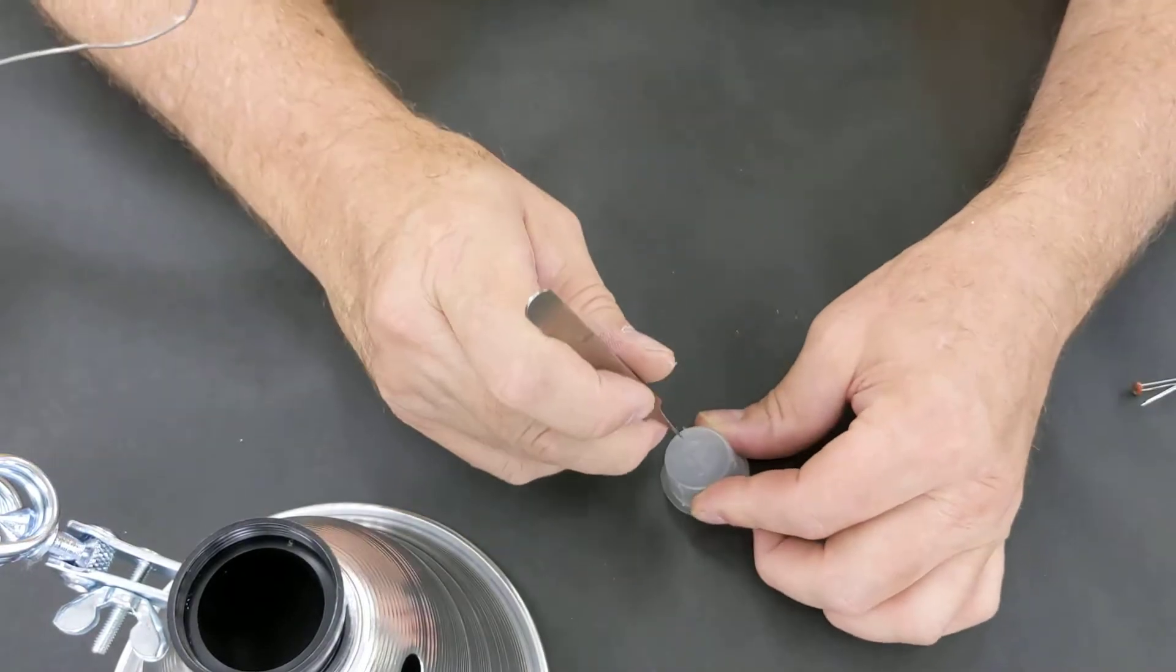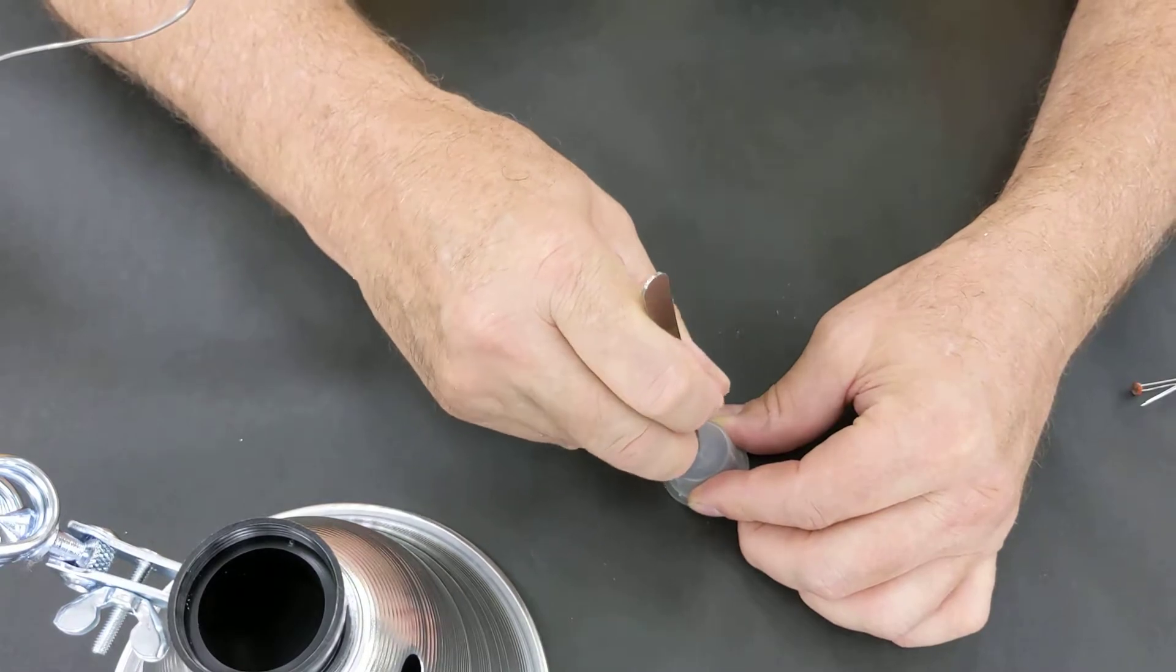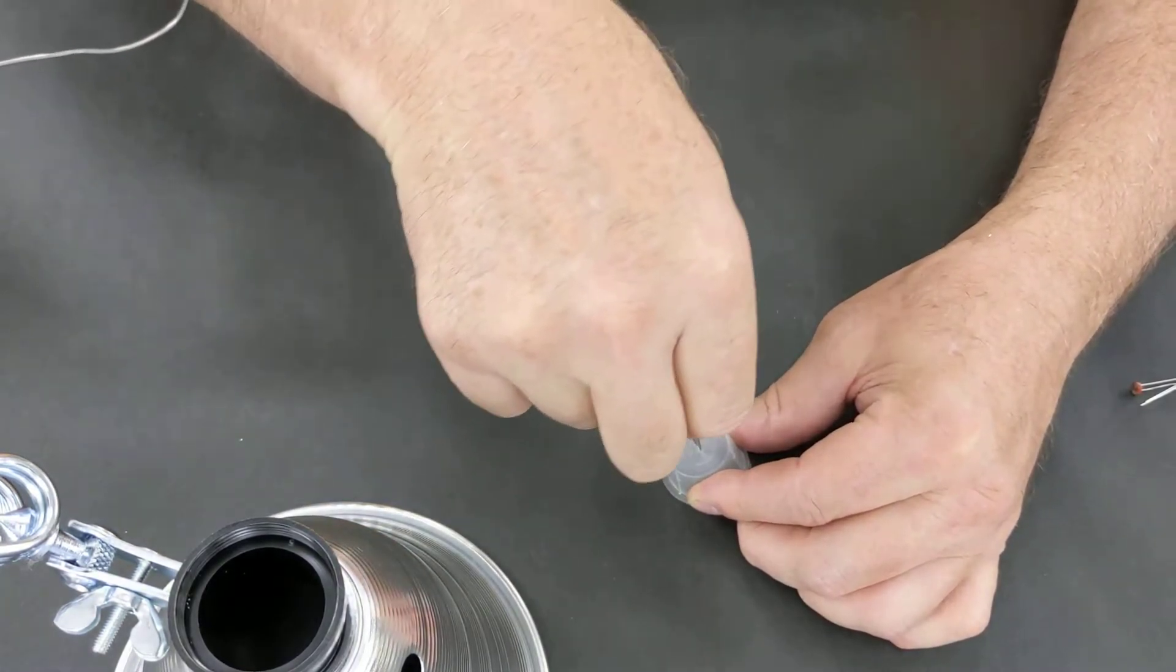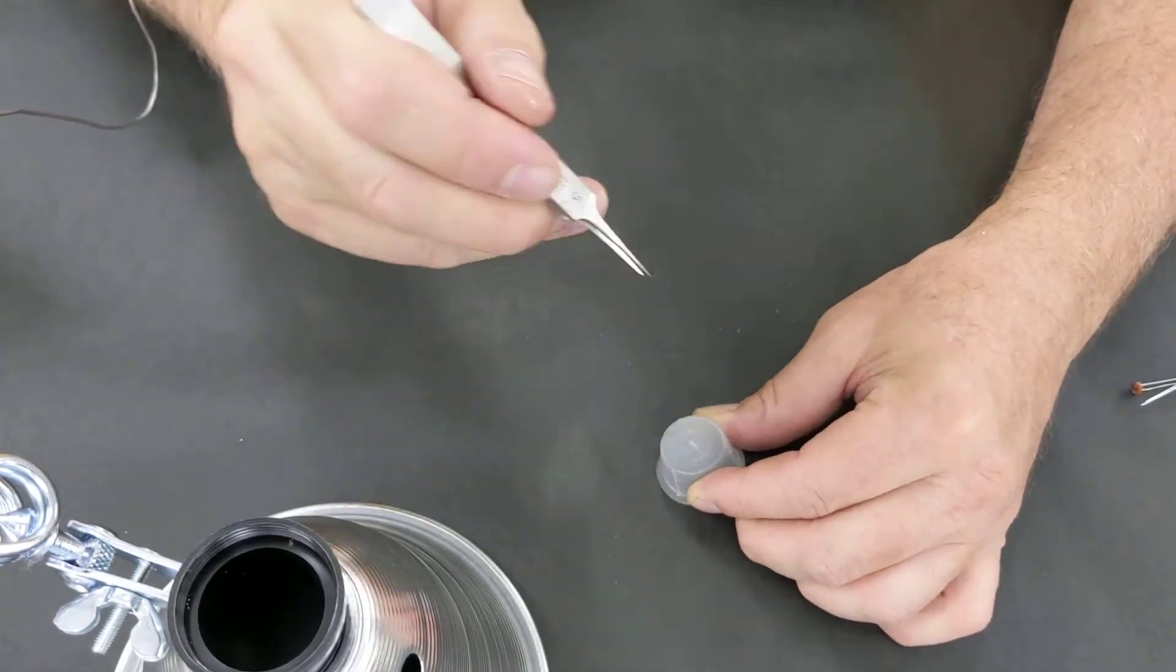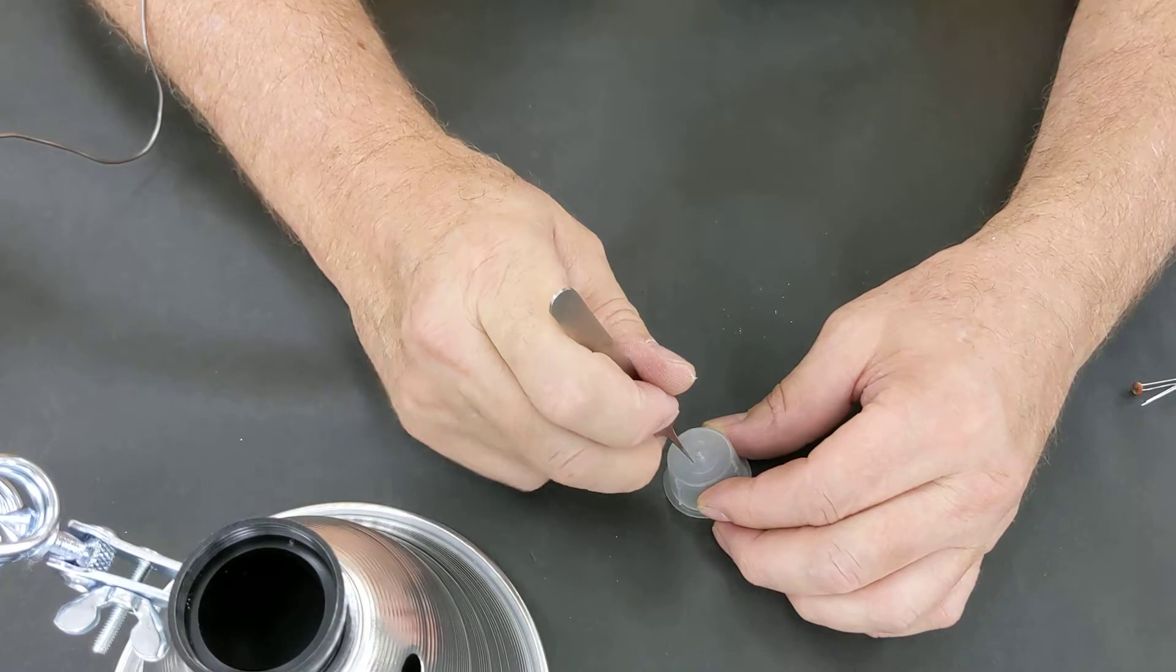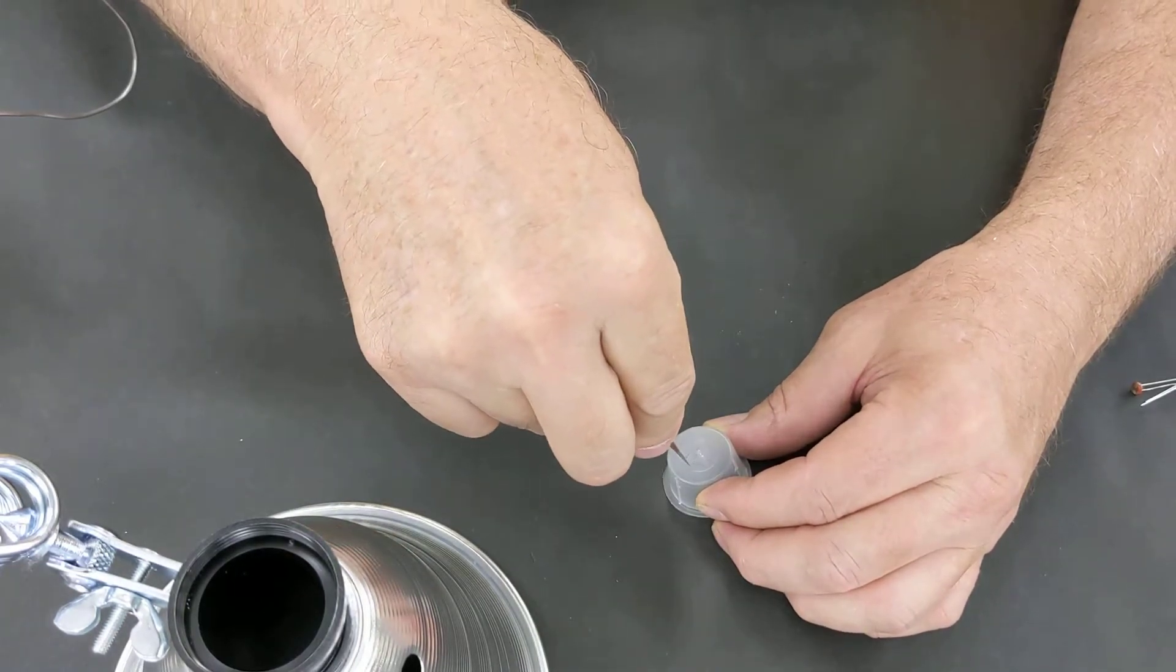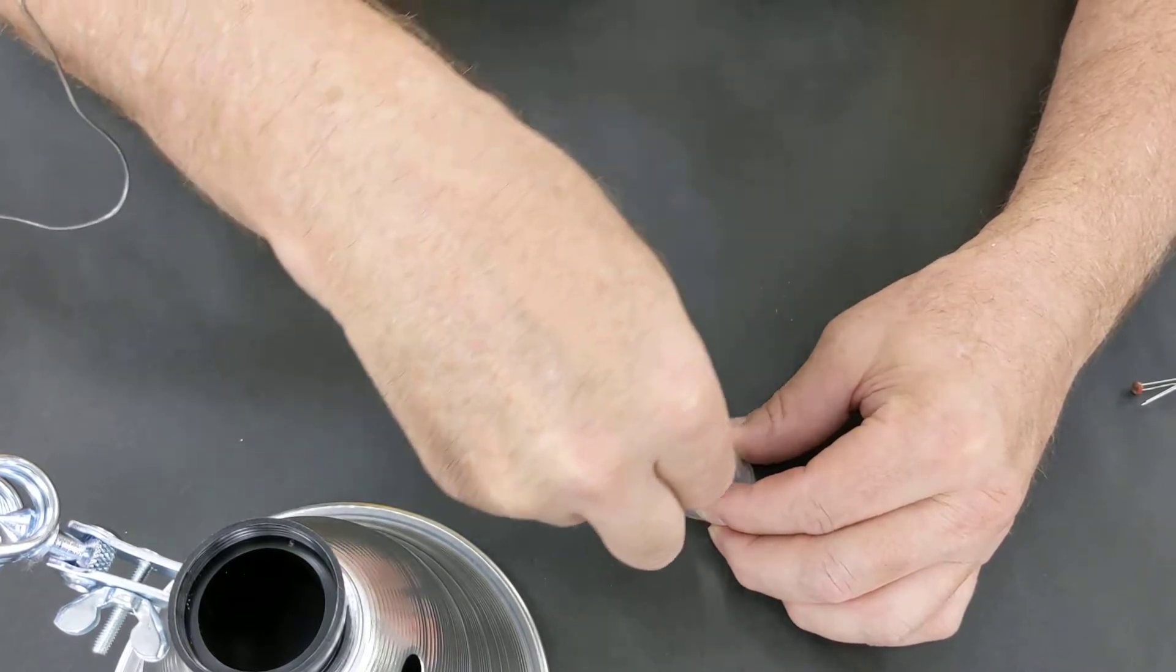I'm going to take some tweezers and punch a hole here in the middle where the LDR will go, and then just off to the side I'm going to punch another set of holes for the LED.